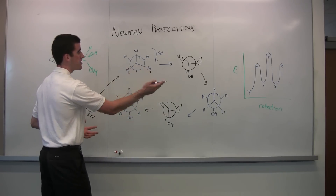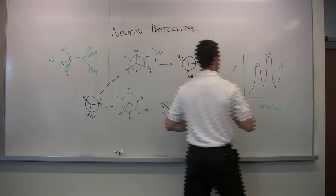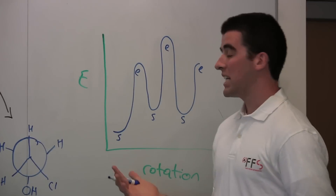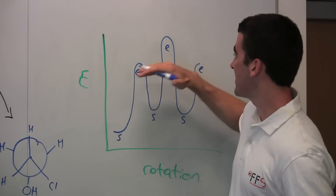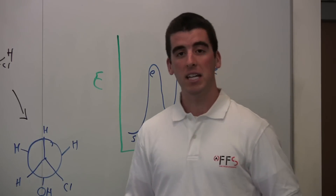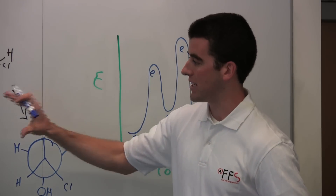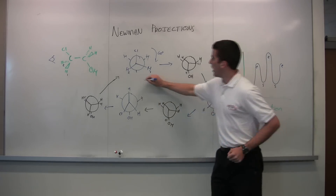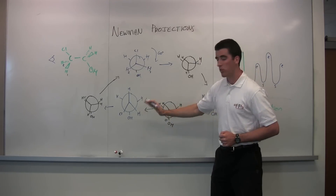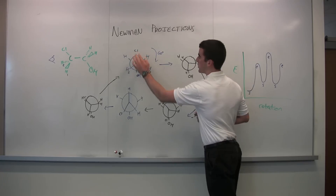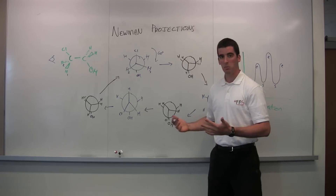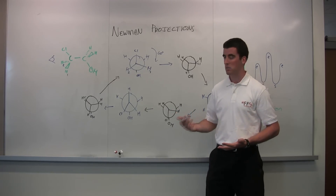You can write out an energy diagram to see how stable the conformers are relative to each other. All staggered conformers are always more stable than any eclipsed one — they require less energy to reach. Within staggered, there are two sub-categories called anti and gauche. Anti is when the two substituents are completely opposite each other — 180 degrees apart — and gauche is when they're next to each other in the staggered configuration. Anti is more stable than gauche, but gauche is still more stable than eclipsed. So anything staggered is always more stable than eclipsed.